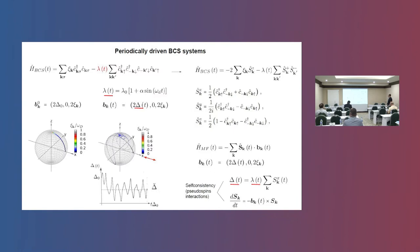We then perturb the system with a periodic perturbation in the pairing interaction, which means a time-dependent magnetic field along the X direction. This pseudo-spin texture evolves in time, and the total magnetization along the X direction gives the superconducting order parameter. To characterize the different dynamical phases, we choose the time-average of the order parameter as an indicator and plot this quantity as a function of the amplitude and frequency of the drive.